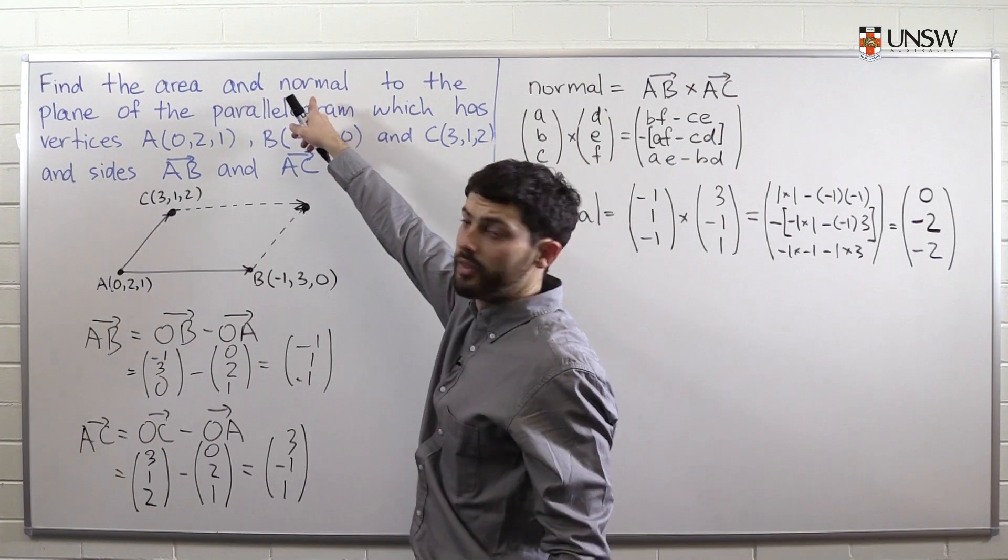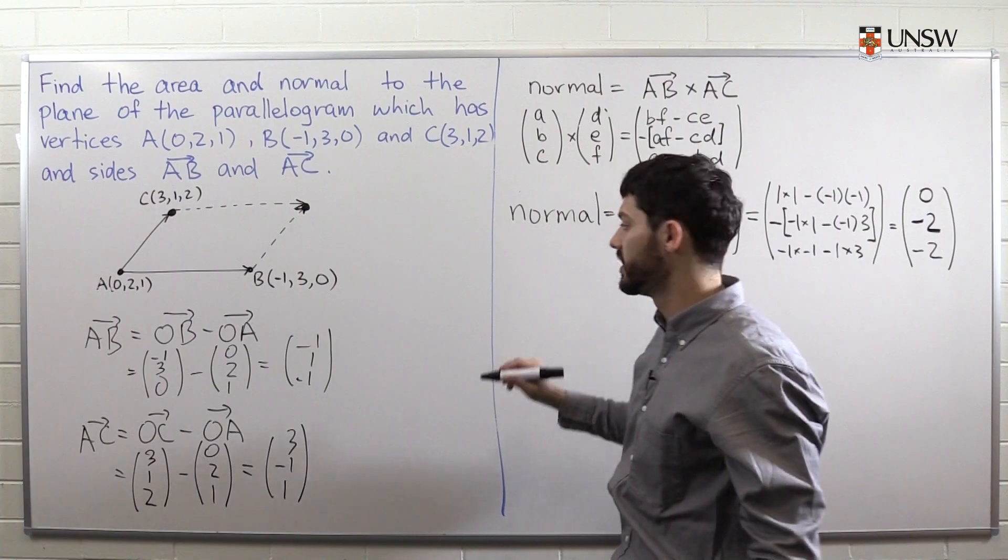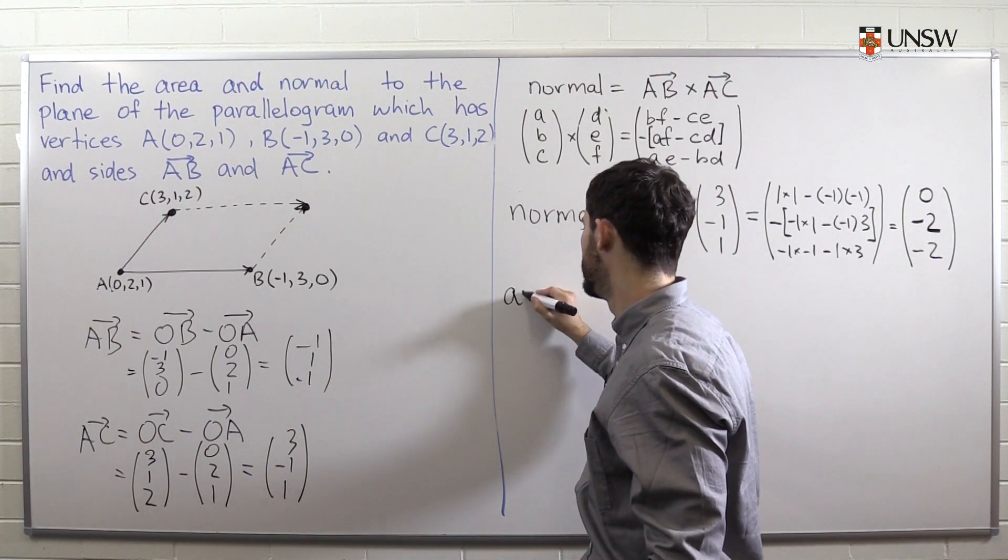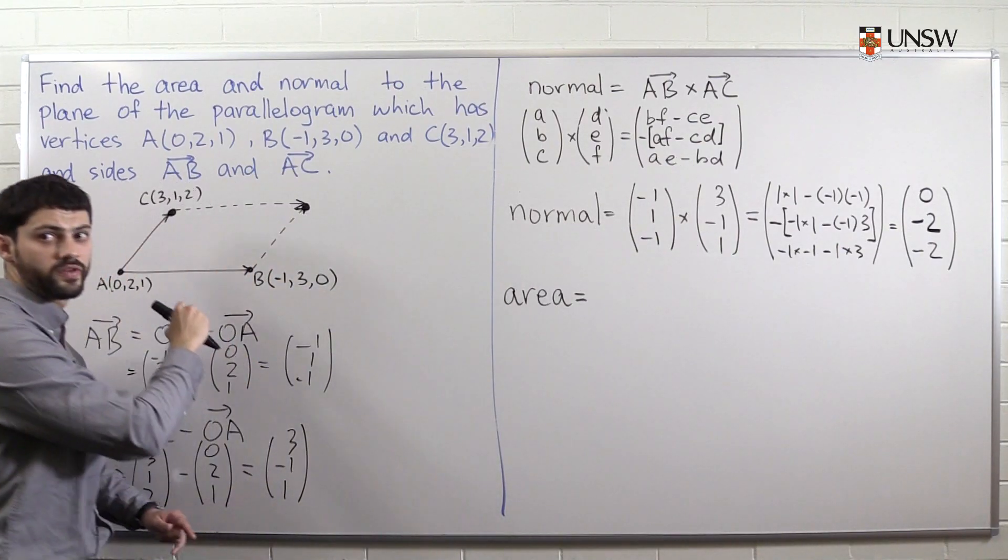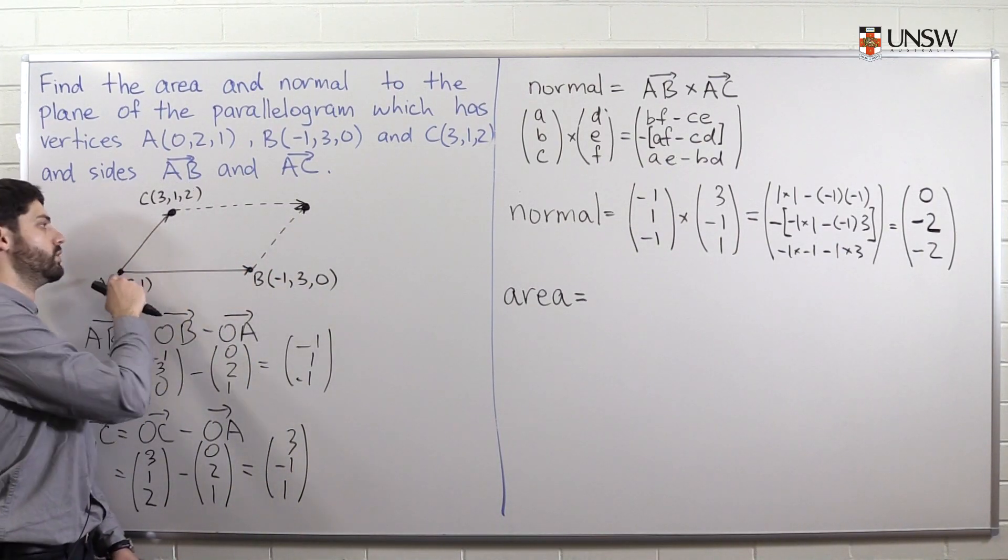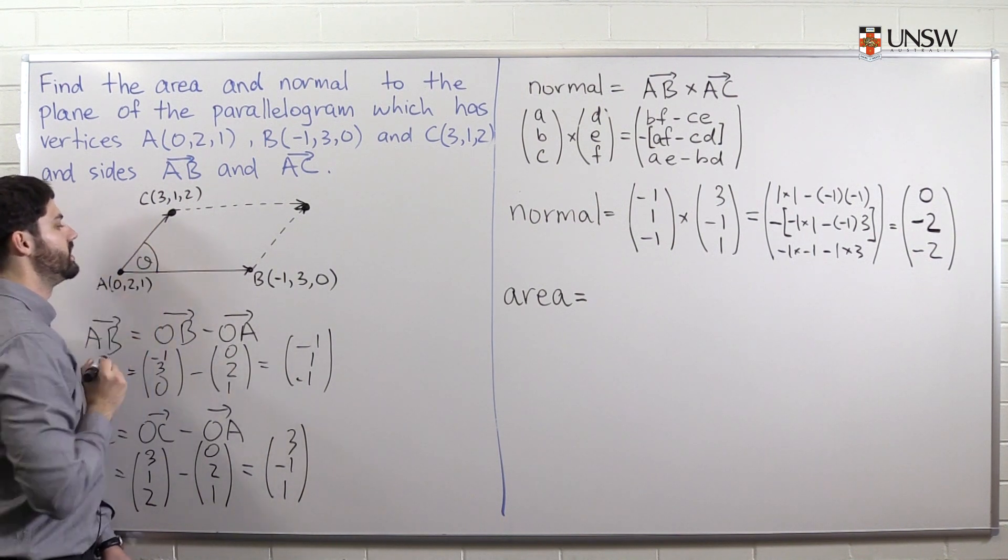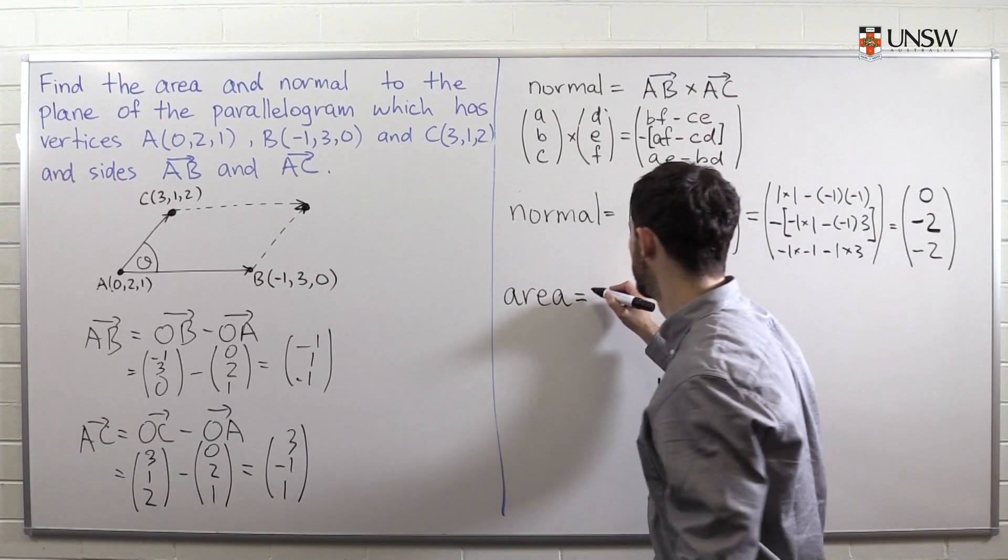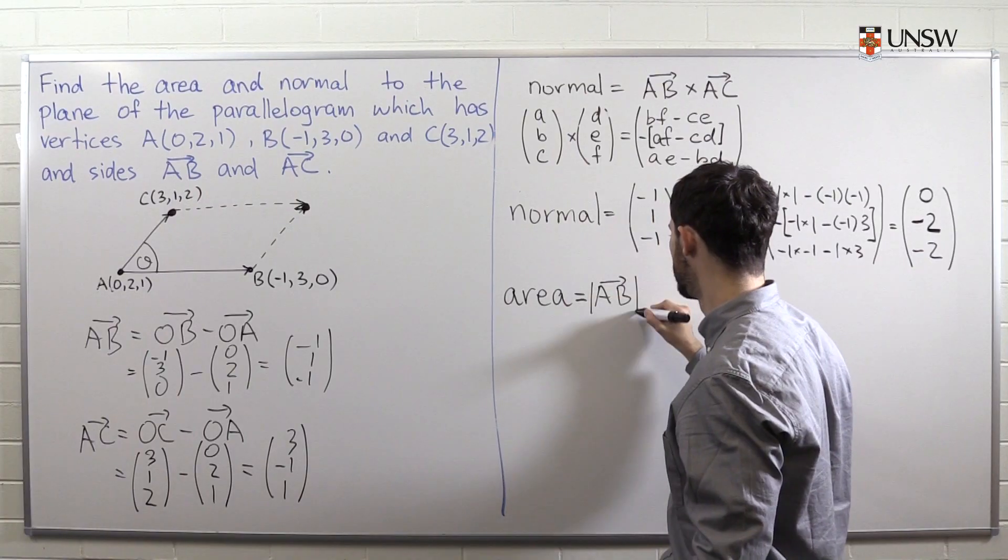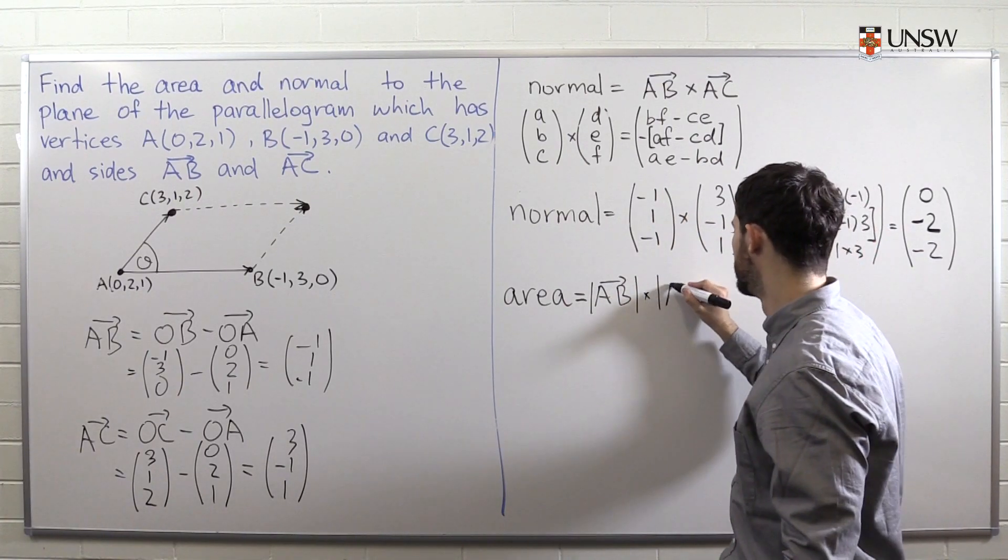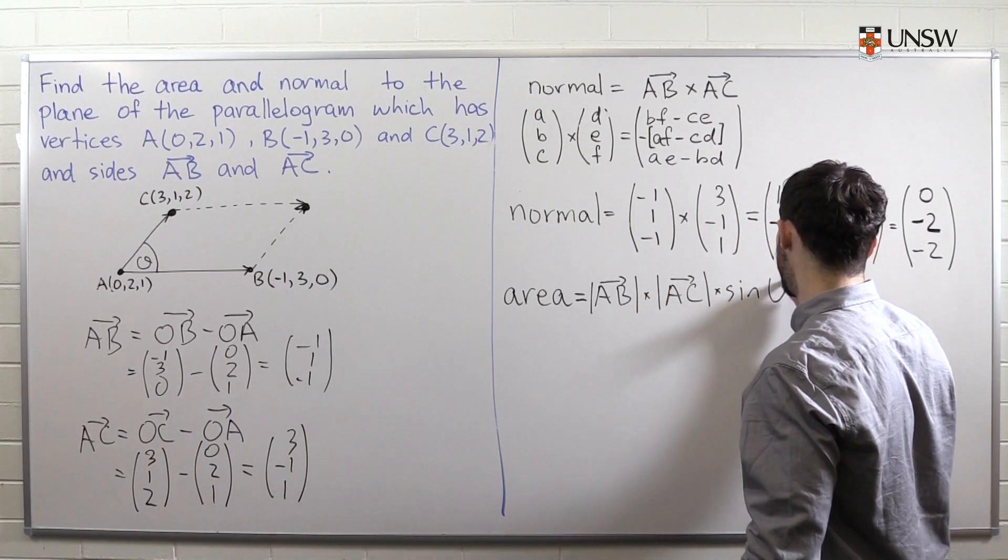Okay. So we found now the normal to the plane. What's left is to find the area. I remind you that if you've learned how to find areas of a parallelogram, you need to find the product of this length with this length multiplied by sine of this angle. So the area is equal to the length of the vector AB multiplied by the length of the vector AC multiplied by sine of the angle.